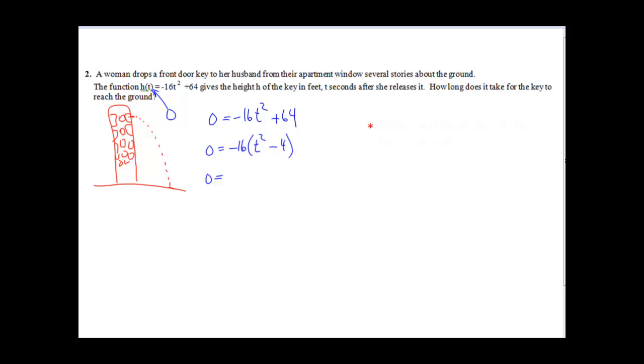I have a perfect square at t and a perfect square with 4, and it's a difference. This is the difference of two perfect squares, so it's something minus something and something plus something: t minus 2, t plus 2.